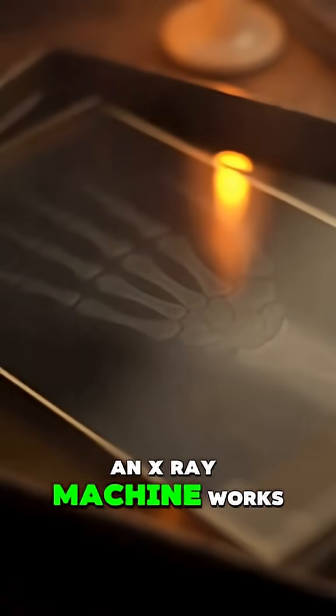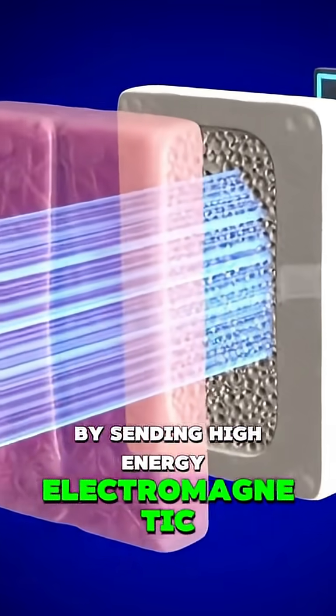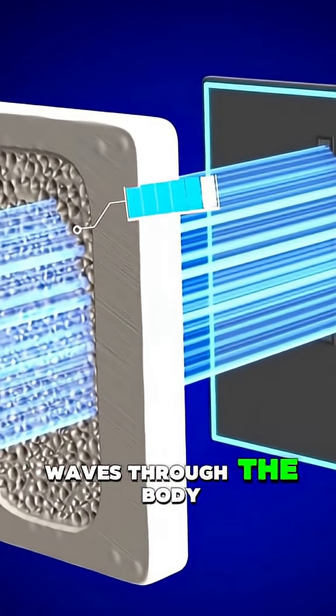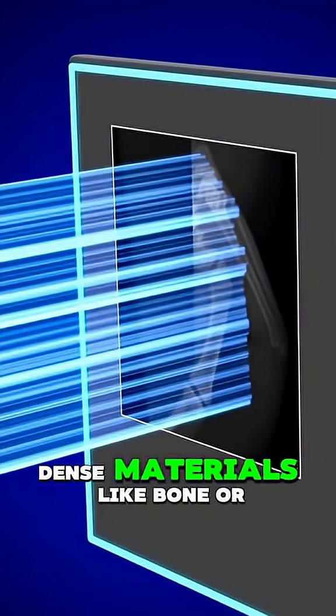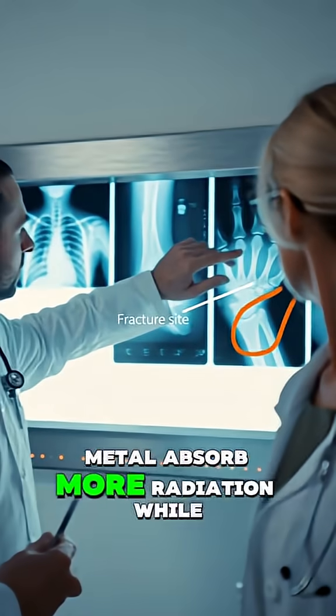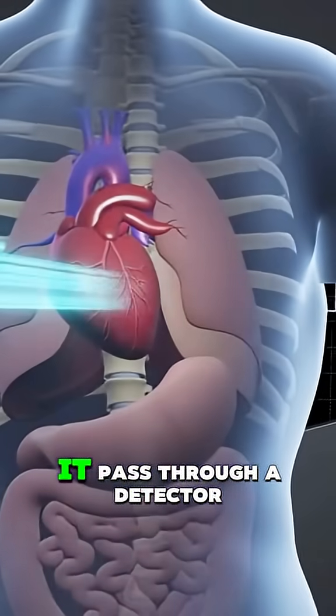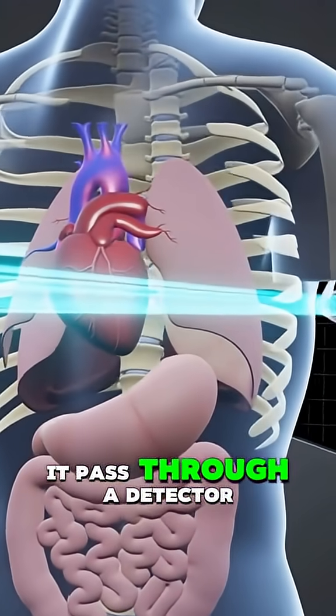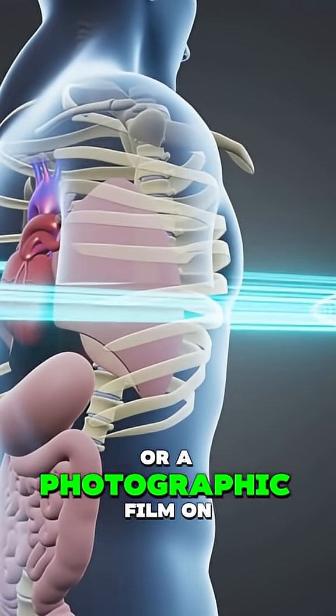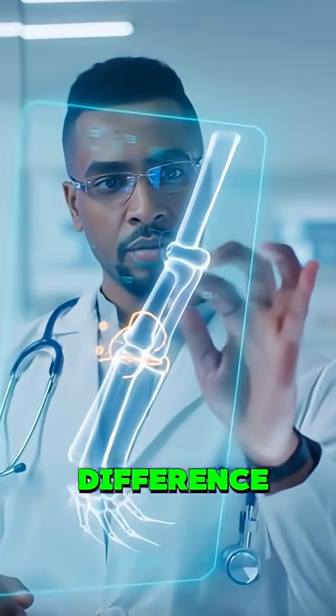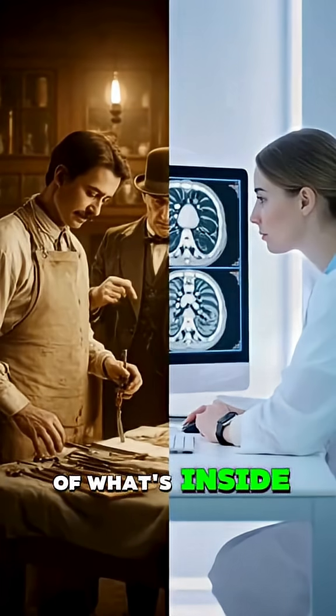An x-ray machine works by sending high-energy electromagnetic waves through the body. Dense materials like bone or metal absorb more radiation, while soft tissue lets more of it pass through. A detector or photographic film on the other side captures the difference, creating a clear image of what's inside.